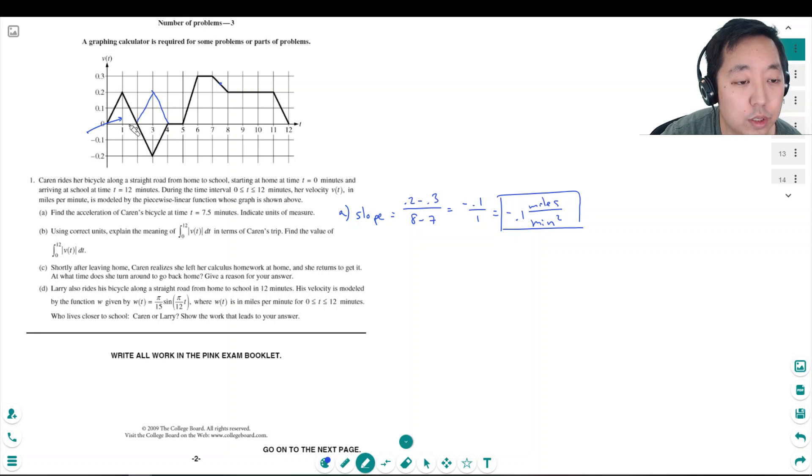This area is 2. Base is 2. Height is 0.2. So this is 0.2. This looks the same. So it's also 0.2.